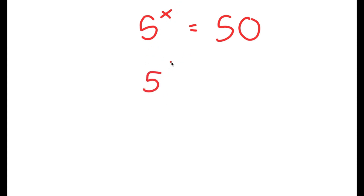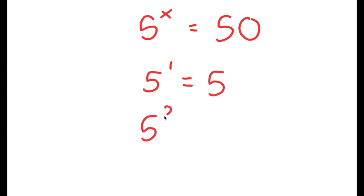So if x is 1, then I get 5 to the power of 1, which is equal to 5, and this is too low. Now if x equals 2, I get 5 to the power of 2, which is 25, and this again is too low.